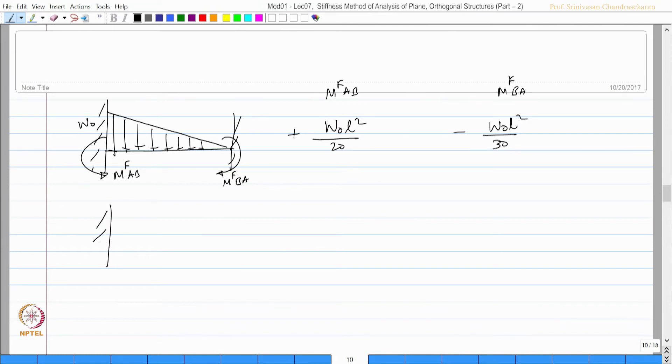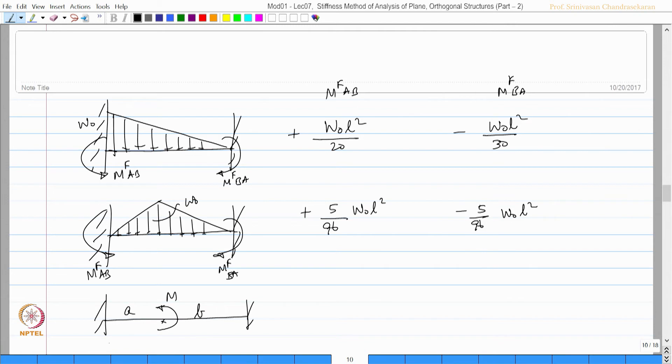If you have a fixed beam with triangular loading of intensity W, this will be M_F^AB, this will be M_F^BA. This will be plus 5/96·W_0·L², this will be minus 5/96·W_0·L².